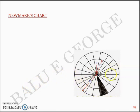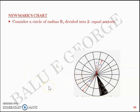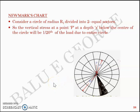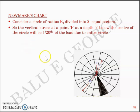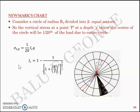The Newmark's chart has several radial lines and concentric circles. Consider a circle of radius R1 divided into two equal sectors. The vertical stress at a point P at depth Z below the center of the circle will be 1/20th of the load due to the entire circle, because you have 20 sectors. So σZ at P equals (1/20) × IC × Q, where IC = 1 − 1/(1 + (R/Z)²)^(3/2). This is basically the concept.